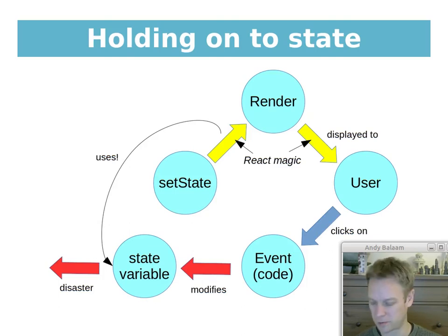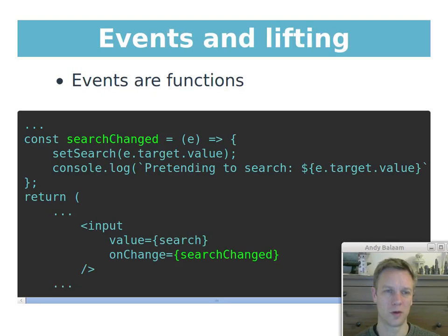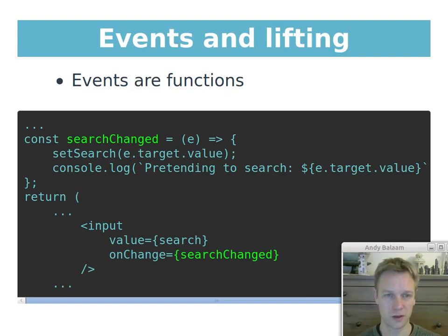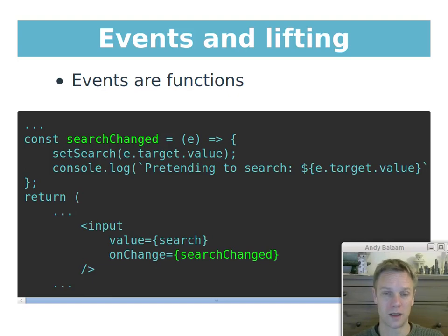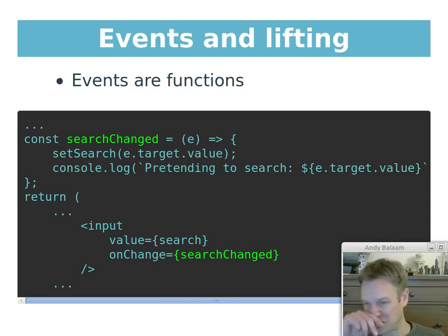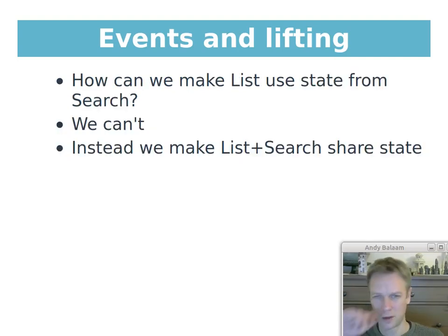Events are just functions. We saw how in the search box we set the onChange attribute to call the searchChanged function. Events are either the function or the thing passed to the function — that argument called e, which is a standard JavaScript event object. That's why it has a target property, and target has a value. Whether it has a value property depends on what type of event it is.